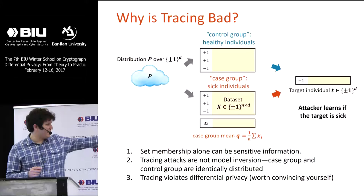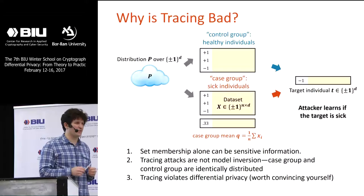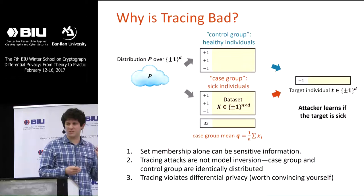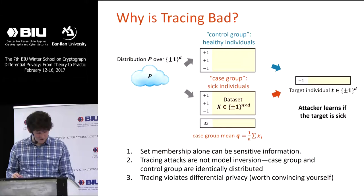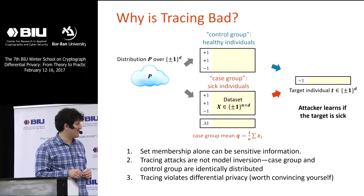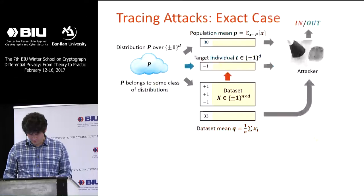It's worth convincing yourself that in this model a tracing attack violates differential privacy — working through this as a way of understanding the definition and what parameters of epsilon and delta are meaningful. I'll leave that as an exercise, but to state it clearly: if you can perform a tracing attack, then the algorithm that gave you the statistics is not a differentially private one.